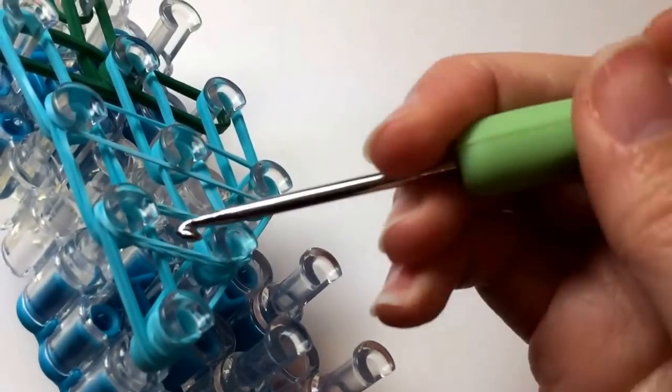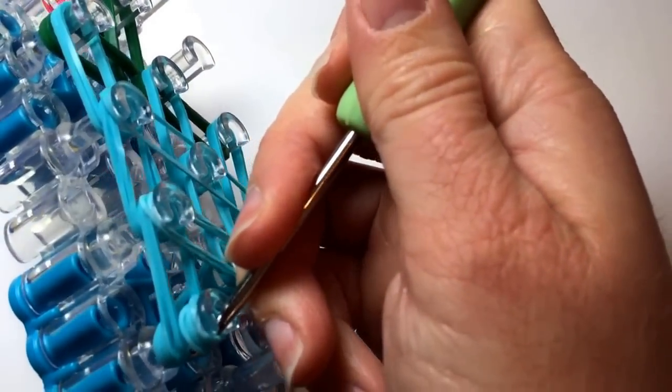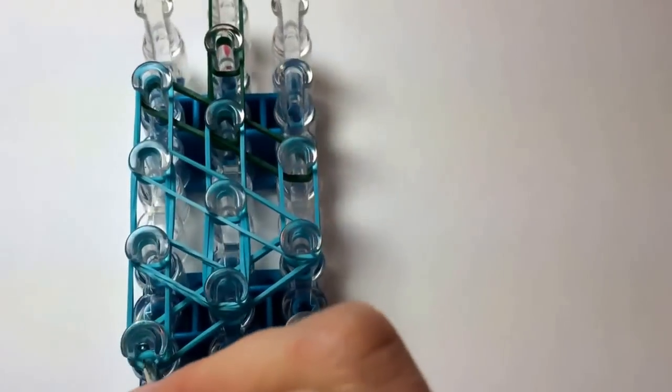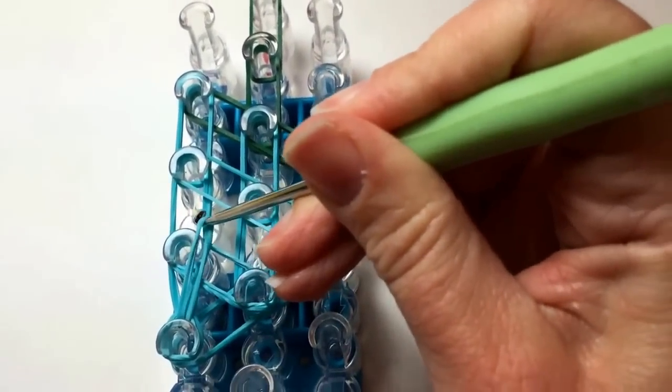We want to get underneath that single cap band that we placed to catch the two rubber bands that are on the left side of the loom. Pull those forward.